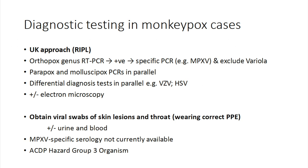We can detect the virus in other samples as well — urine, blood, skin lesions, throat — but often we will just swab the skin lesions to get the diagnosis in the UK. There isn't any monkeypox-specific serology; there is some vaccinia serology, but it's not really used for acute diagnosis. It's classified as a Group 3 organism by the ACDP group in the UK, which means we have to handle it in certain ways.